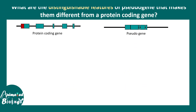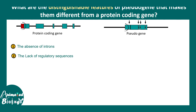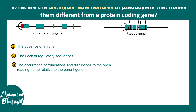There are different kinds of pseudogenes, but what are the factors that can distinguish them from a protein coding gene? There could be absence of introns, the lack of regulatory sequences like promoter elements, and the occurrence of truncations or disruptions of open reading frames due to mutations — these are predominant features of pseudogenes.